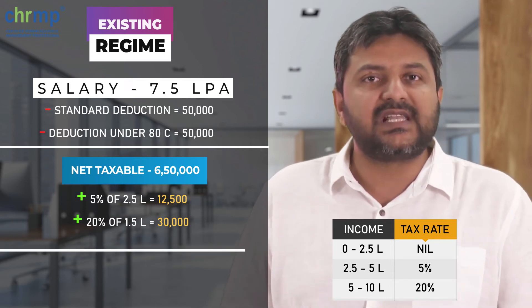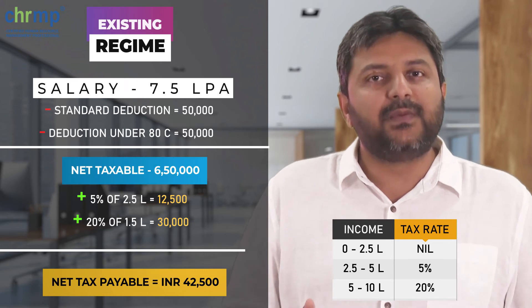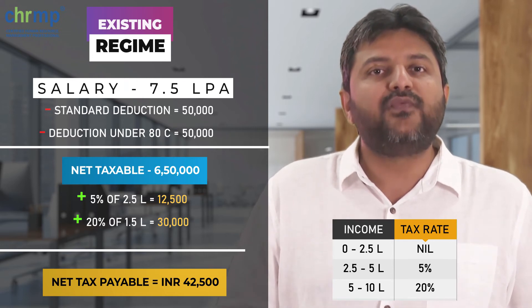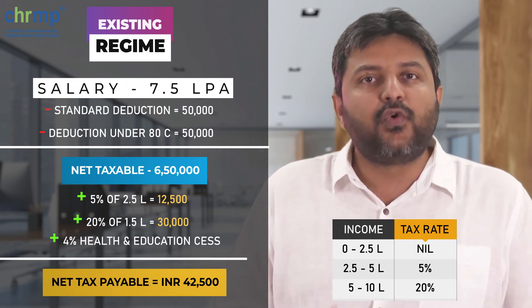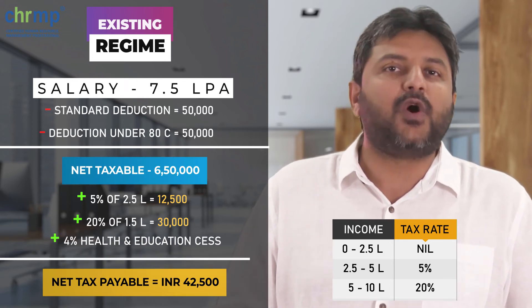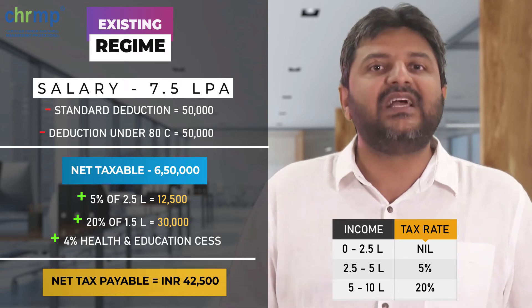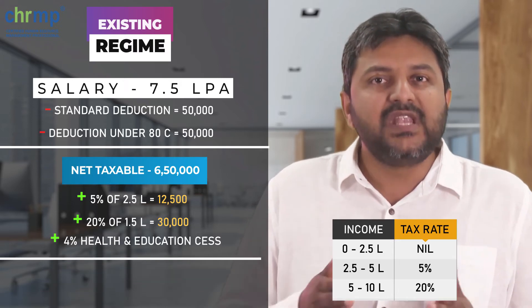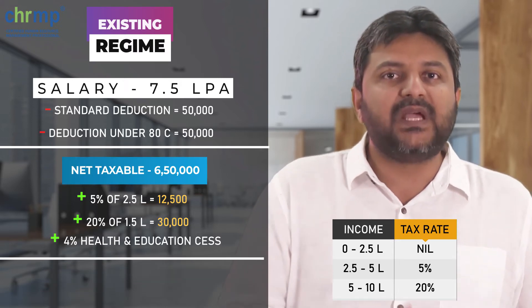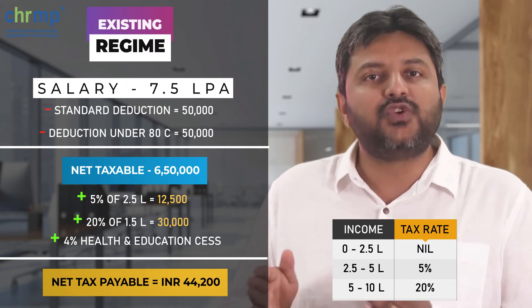Adding both the slabs, the net tax payable would be Rs. 42,500. 4% of this amount would be added as health and education cess, so the net tax payable now becomes Rs. 44,200.